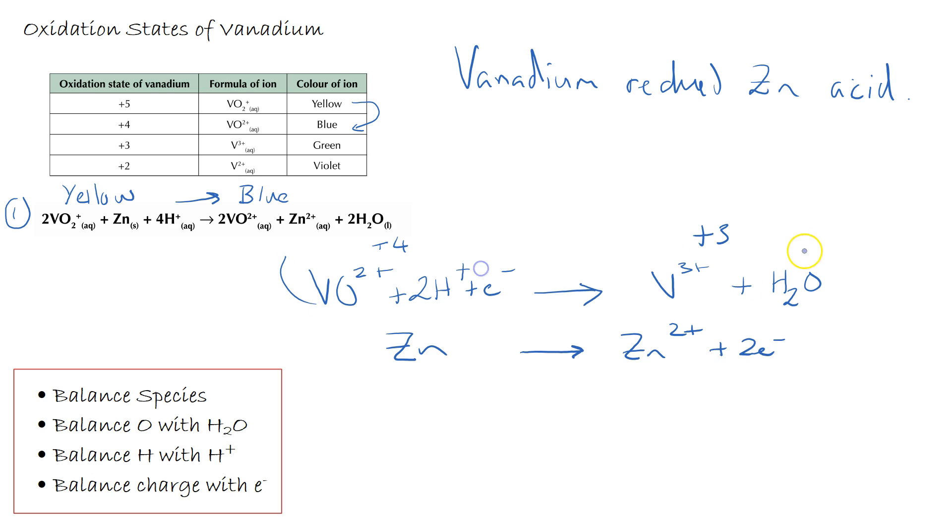Then again we balance the electrons. We've got two plus four plus on this side and three plus on the right hand side, so we need one electron on the left. We're reacting it with zinc giving zinc two plus plus two E minus. So again we need two of these. We balance to get 2VO2+ plus 4H+ giving us 2V3+ plus zinc two plus and two waters. There's our second equation for the blue to green colour change.